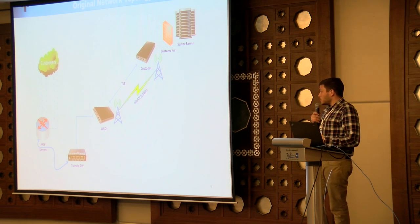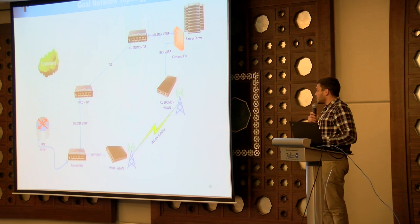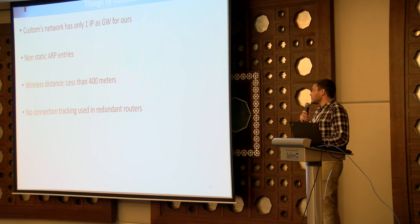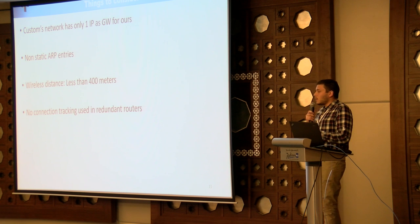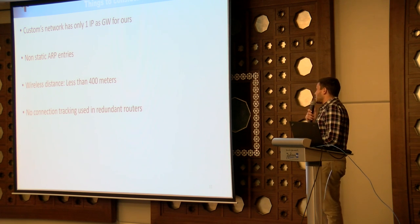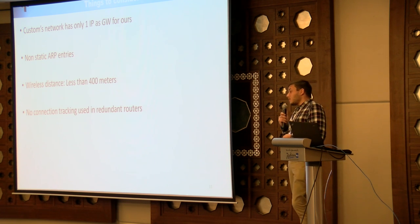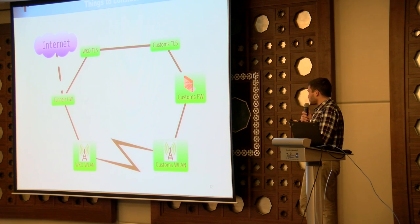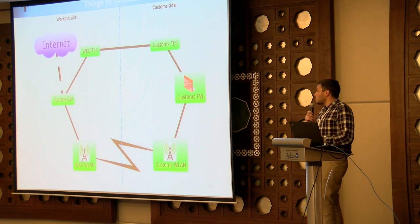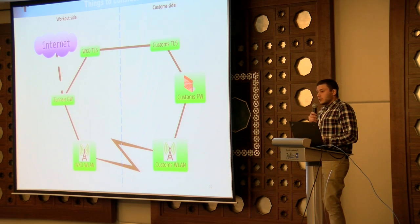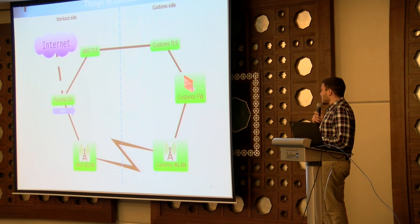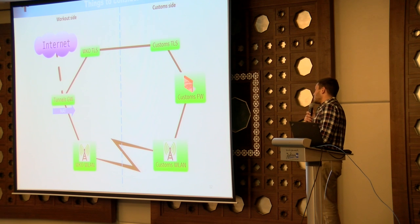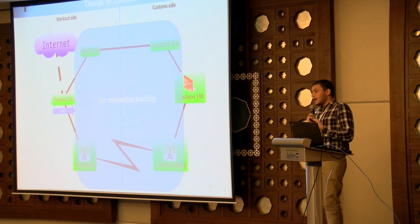This was our original network topology, and this is the one we achieved after applying these changes. Things to consider: the custom network needs only one IP address to reach our network; there are non-static ARP entries in the switches; wireless distance is less than 400 meters; and very importantly, there is no connection tracking used in the redundant routers. The NAT masquerade action takes place on the tunnel gateway, so the sessions are handled by that router, meaning these four redundant routers don't use connection tracking — which makes failover transparent for customers.